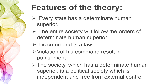Now the features of the theory. Every state has a determinant human superior. Austin is saying that in every state there is a superior person, and the entire society will follow the orders of the determinant human superior.